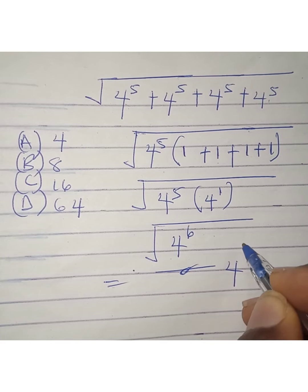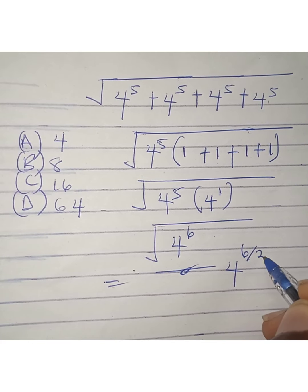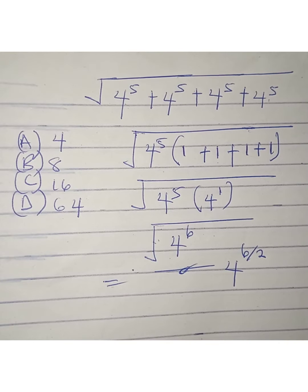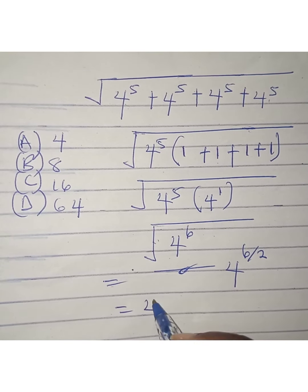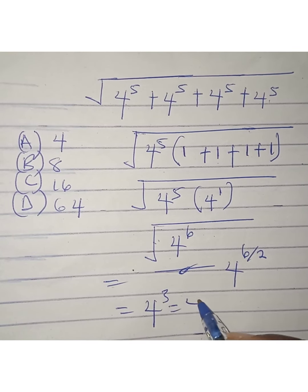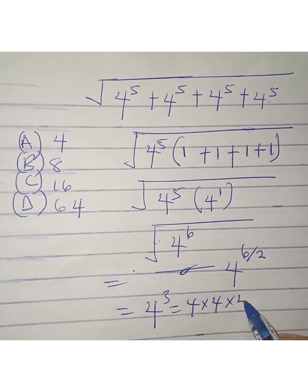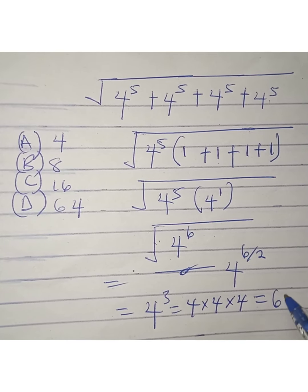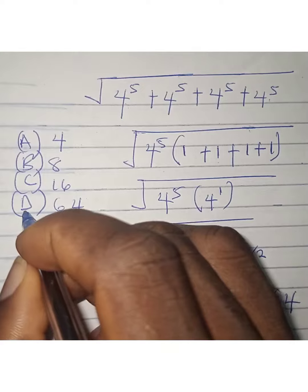4 to the power of 6 divided by 2, that's for the square root. So everything will now give us 4 to the power of 3, and that's 64. Thank you for watching, bye bye.